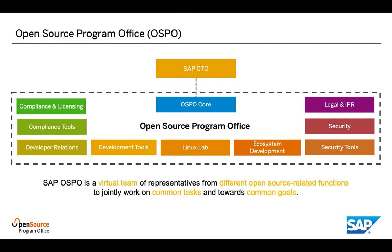This way we are able to tap into the expertise of the different open source-related functions like legal, compliance, security, or developer relations. Our OSPO has chosen Scrum as its working mode, in the same way our development teams are working.